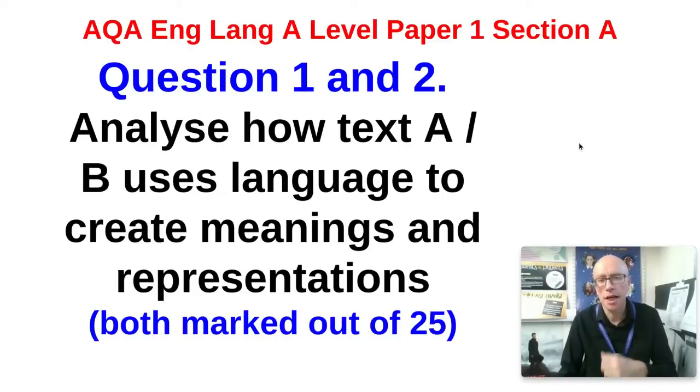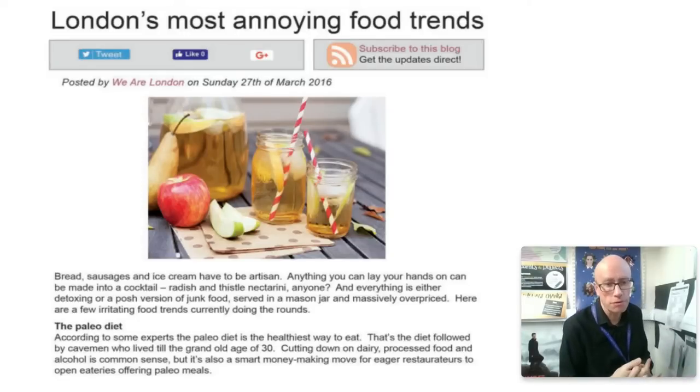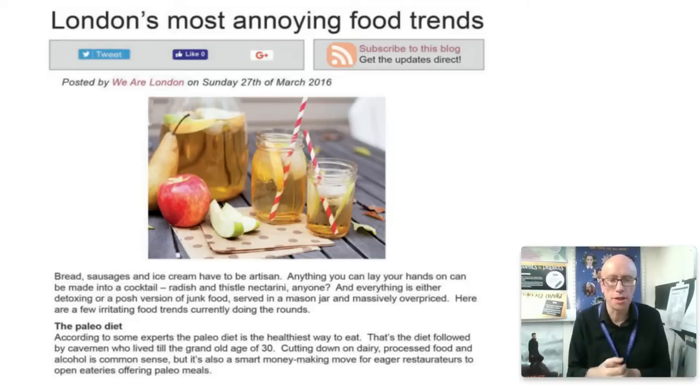Okay so it's pretty important that you get the technique right. Now we're looking at the 2019 summer papers: 'London's most annoying food trends' posted by We Are London in 2016. Bread, sausages and ice cream have to be artisan, anything you can lay your hands on can be made into a cocktail - radish and thistle nectarine anyone? And everything is either detoxing or a posh version of junk food served in a mason jar and massively overpriced. Here are a few irritating food trends currently doing the rounds: the paleo diet. According to some experts the paleo diet is the healthiest way to eat. That's the diet followed by cavemen who lived to the grand old age of 30.